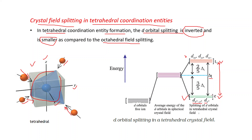The energy of the E set is decreased by 3/5 of Δt, and the energy of the t₂ set is increased by 2/5 of Δt.